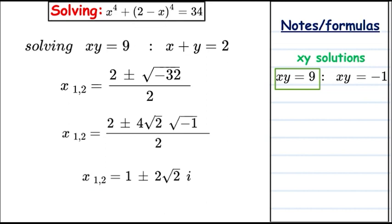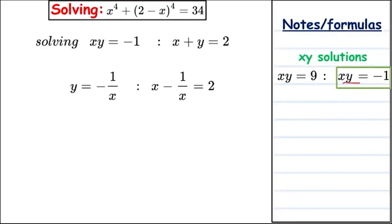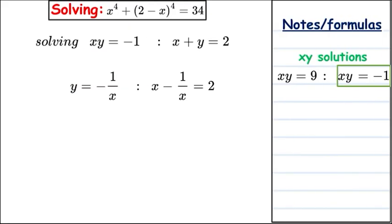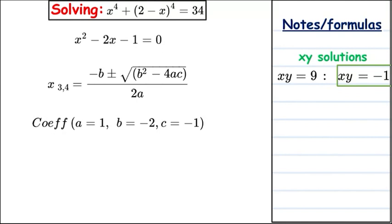For the second combination, xy equals −1. Dividing across by x gives y equals −1/x. Substituting into x plus y equals 2, we get x minus 1/x equals 2. Multiplying by x and rearranging gives x² minus 2x minus 1 equals 0. We apply the quadratic formula again with a=1, b=−2, c=−1.